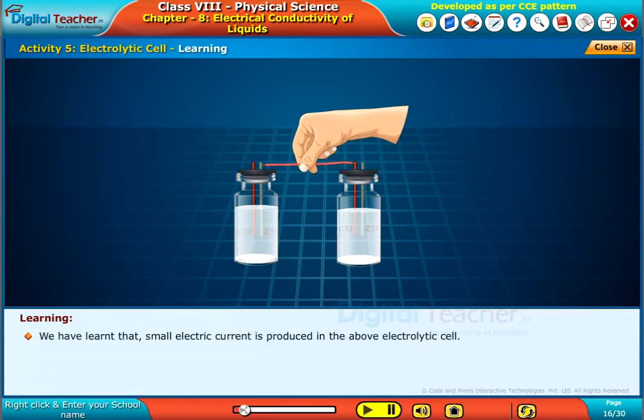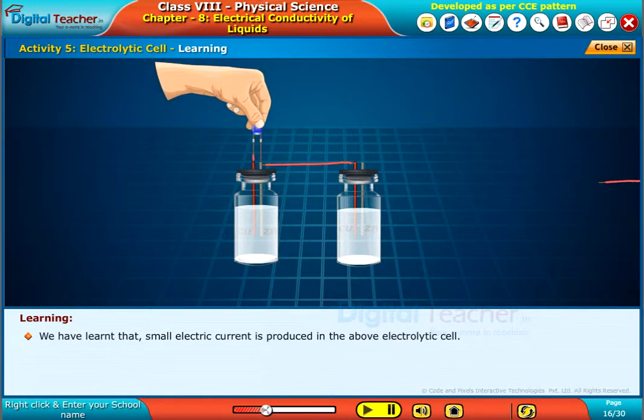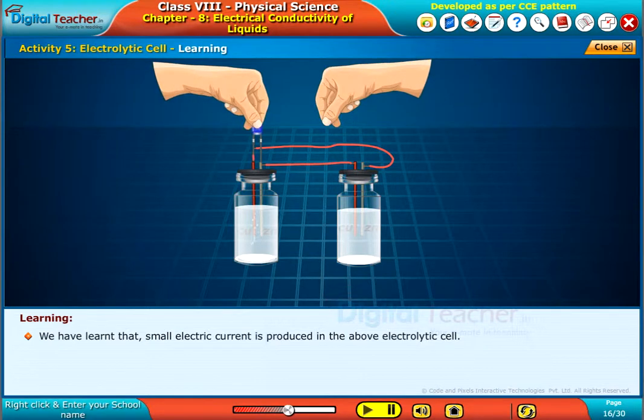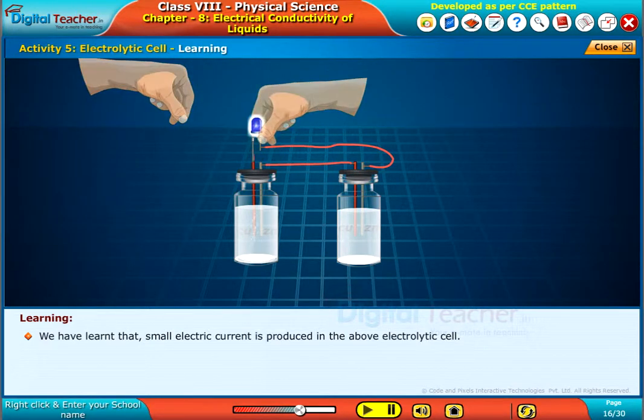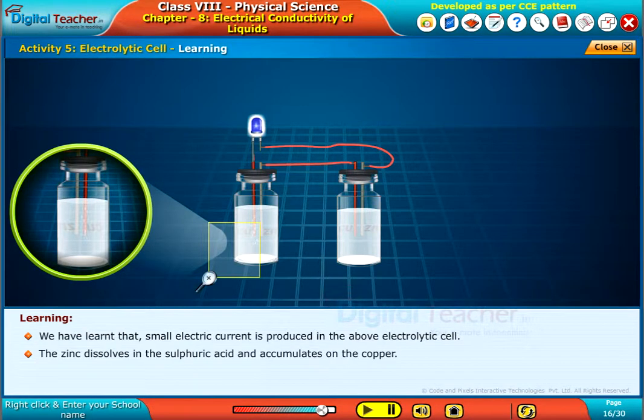We have learned that small electric current is produced in the above electrolytic cell. The zinc dissolves in the sulfuric acid and accumulates on the copper.